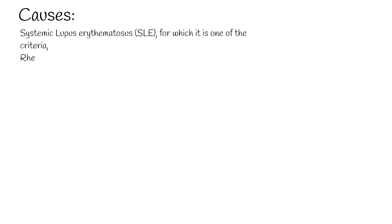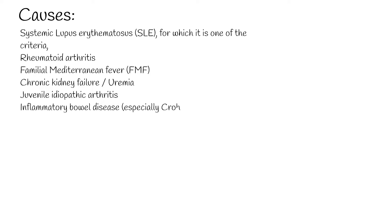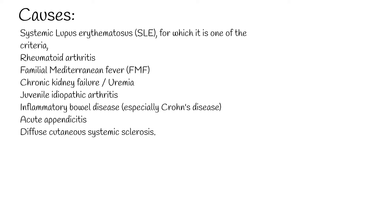Other secondary causes include rheumatoid arthritis, Familial Mediterranean fever (FMF), chronic kidney failure with uremia, juvenile idiopathic arthritis, inflammatory bowel disease — especially Crohn's disease — acute appendicitis, and diffuse cutaneous systemic sclerosis.